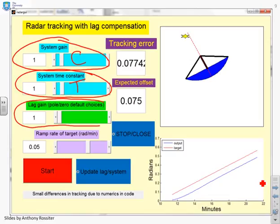The third one is the ratio of the pole to zero in the lag, so that's the value r. And the final one is the ramp rate of the target. So essentially you're choosing your target. So you've got a number of things you can choose.